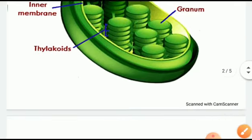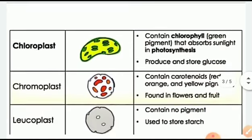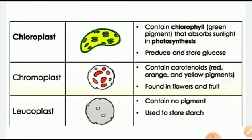There are three types of plastids. Number one is chloroplast, which contains the green pigment chlorophyll that absorbs sunlight in photosynthesis and produces and stores glucose. Number two is chromoplast, which contains carotenoids — the red, orange, and yellow pigments — and is found in flowers and fruits. Number three is leucoplast, which contains no pigment and is used to store starch.